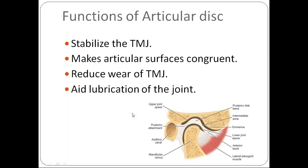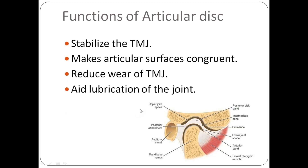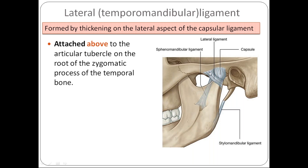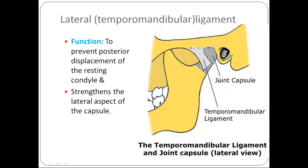The functions of the articular disc are: it makes the articular surfaces congruent, stabilizes the movement of the TMJ, reduces wear and tear of the joint, and helps in lubrication. The lateral temporomandibular ligament is formed by thickening of the lateral aspect of the capsular ligament. It is attached above to the articular tubercle, extends downward and backward at 45 degrees, and is attached posteriorly to the lateral surface and posterior border of the neck of the condyle. Its functions are to stabilize the TMJ and prevent posterior dislocation of the resting condyle.